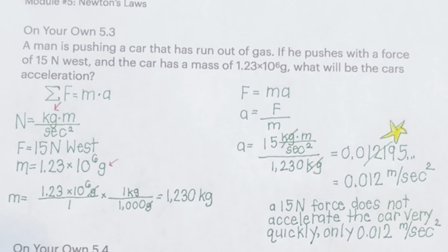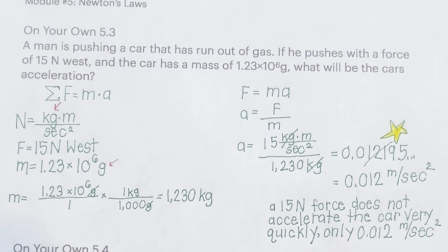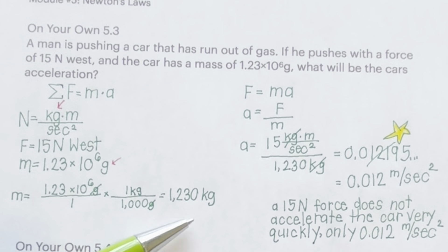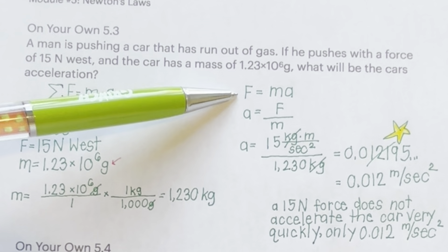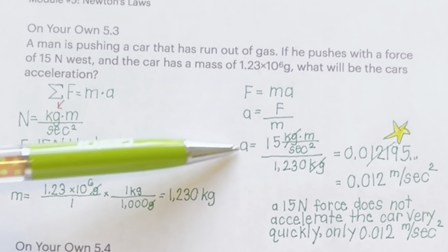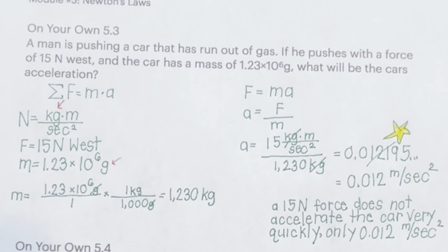On Your Own 5.3: A man is pushing a car that has run out of gas. If he pushes with a force of 15 Newtons west, and the car has a mass of 1.23 times 10 to the 6 grams, what will the car's acceleration be? In this problem, we are given a force of 15 Newtons west and a mass of 1.23 times 10 to the 6 grams, and we are asked to calculate acceleration. This is a simple application of F equals MA. The problem, however, is that our units are not consistent — we have grams and need kilograms. So we need to convert the mass into kilograms. After converting, we use Sigma F equals M times A. To solve for A, we divide the force by the mass and substitute those numbers in.